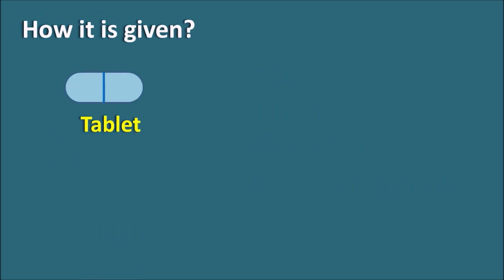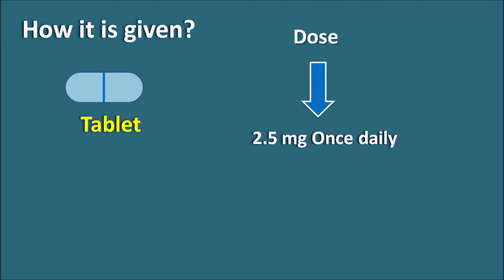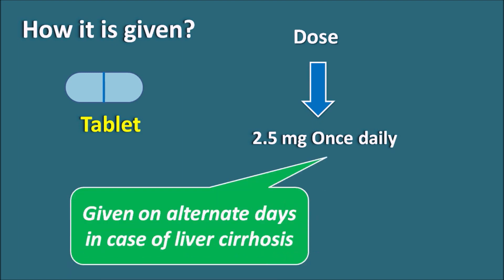How is it given? Letrozole is given as a tablet at a dose of 2.5 mg once daily. But in patients having hepatic impairment such as liver cirrhosis, this drug is not given daily — it is given on alternative days in order to reduce toxicity.